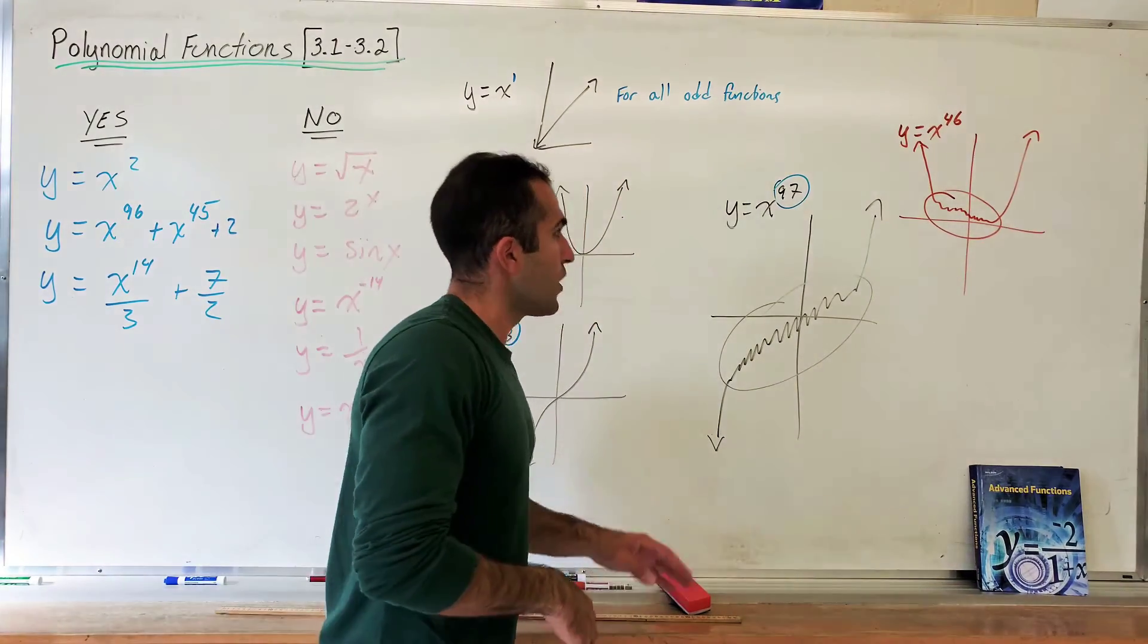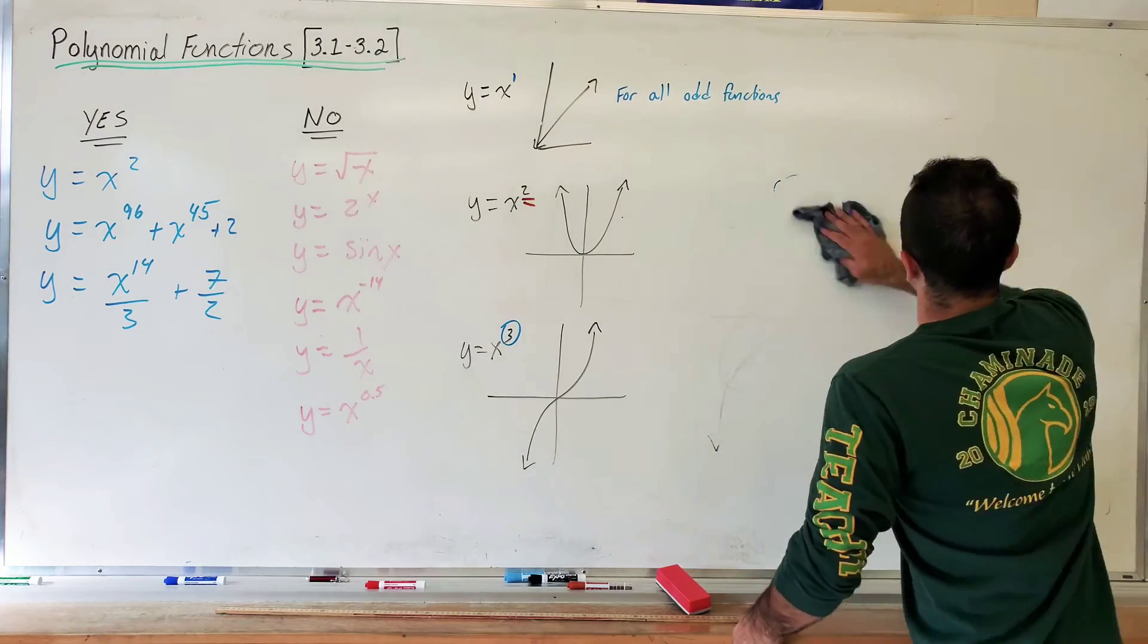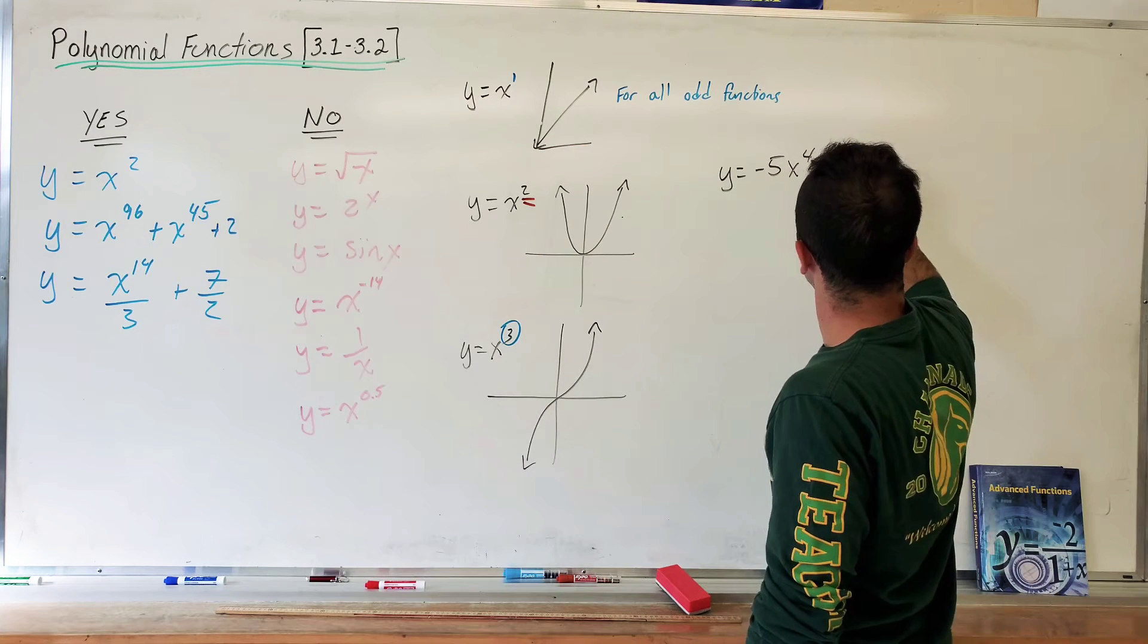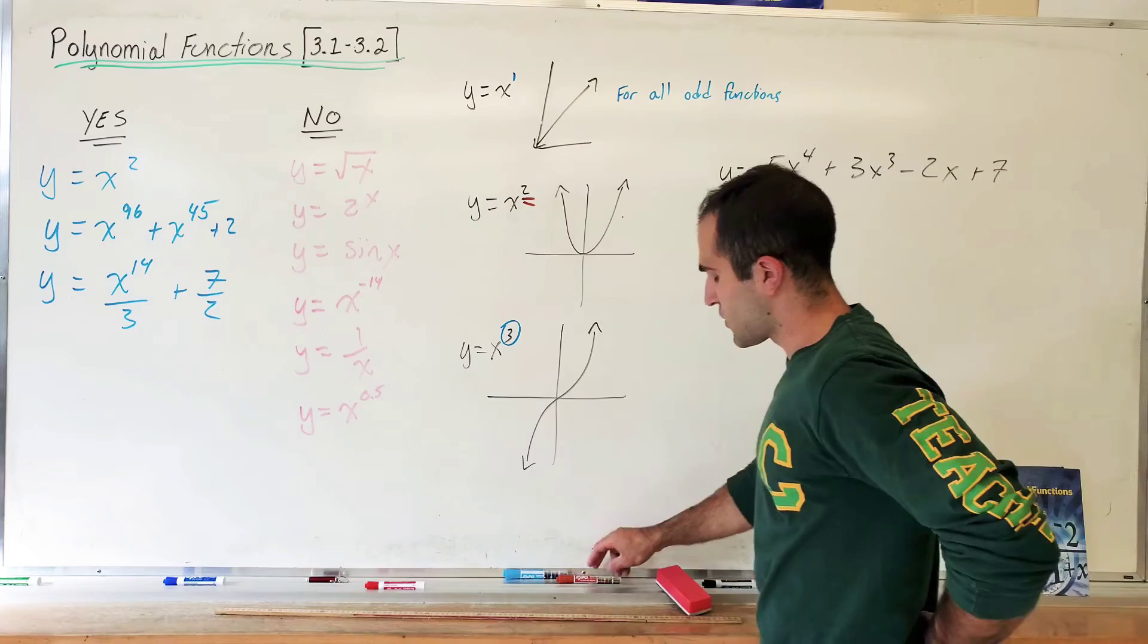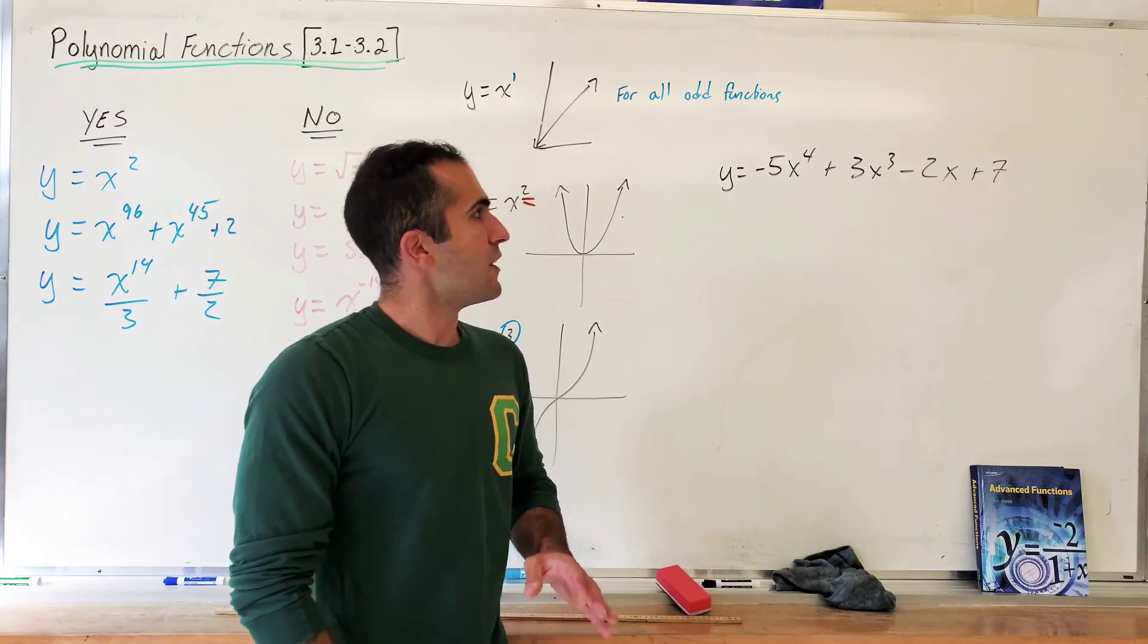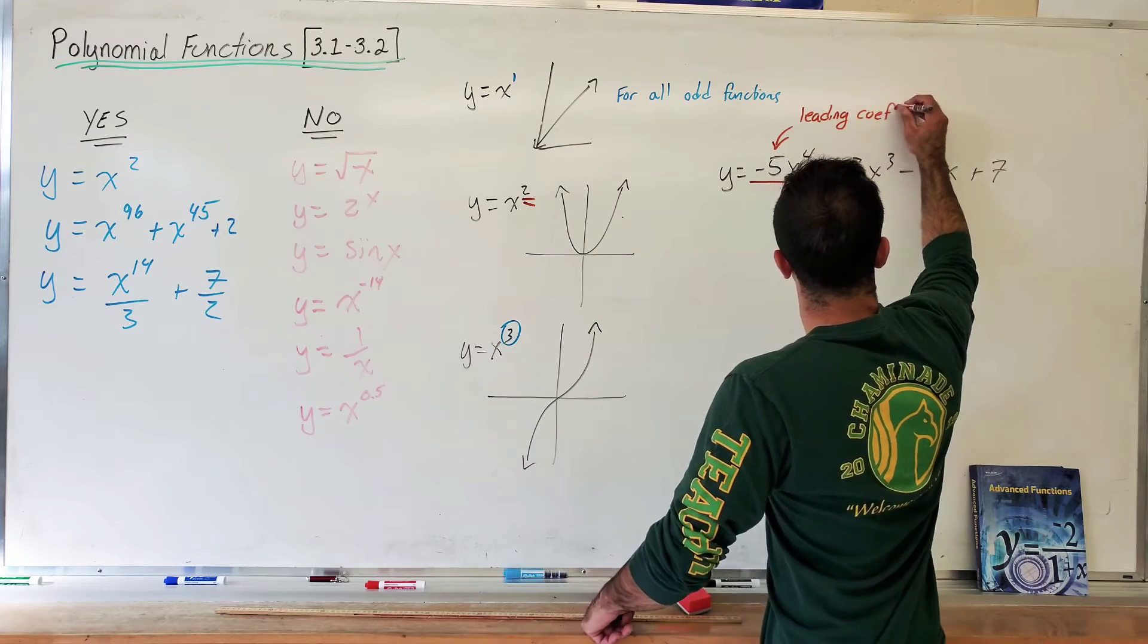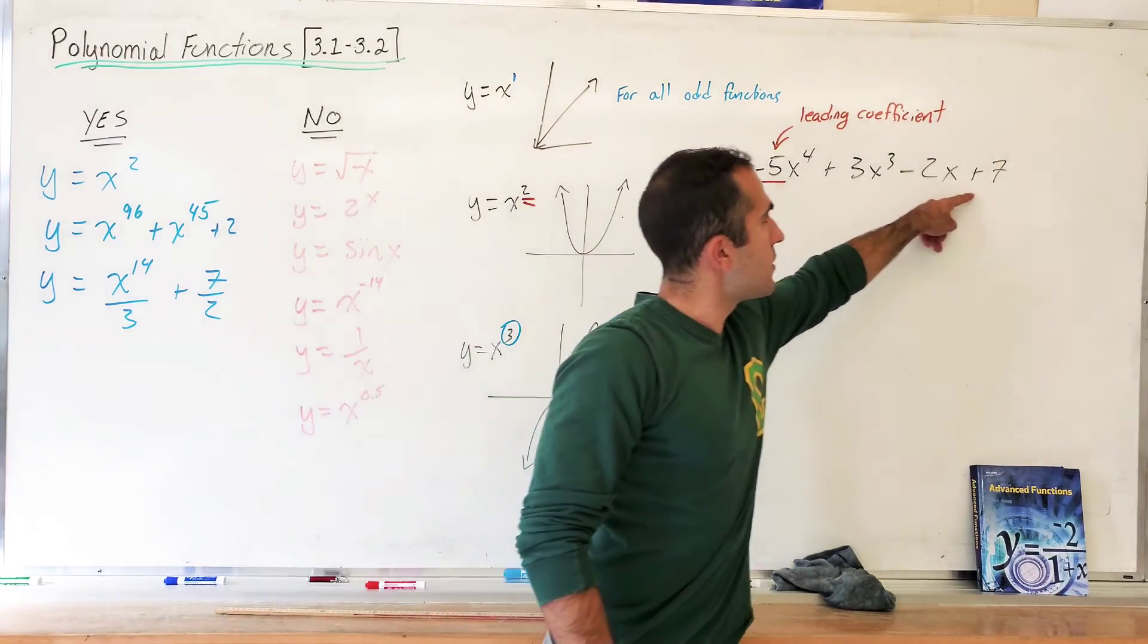Okay? Now, what if questions don't look like these monomial? These are pretty straightforward. They're easy. Yeah, I agree. What if they look like y equals, I don't know, negative 5x to the 4 plus 3x cubed minus 2x plus 7? Okay? It's in standard form. There's a bunch of stuff going on here. You're going to have to factor this eventually. Some stuff that you can play with in order to graph this accurately. But we don't care about that. The only thing that we're going to care about in polynomial functions for 3.1 and 3.2 is something called the leading coefficient. Now, the leading coefficient is the number and sign in front of the highest power in the polynomial function.